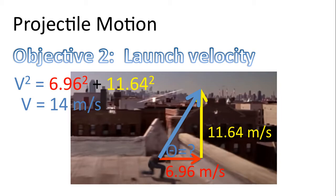We end up with a hypotenuse of 14 meters per second or a launch velocity of 14 meters per second. Using opposite over adjacent and inverse tangent, we end up with a launch angle of 59 degrees. So that's Spider-Man's launch velocity: 14 meters per second at an angle of 59 degrees with respect to the horizontal.